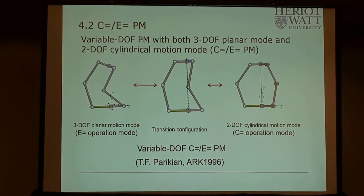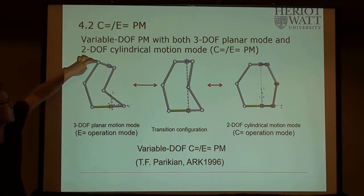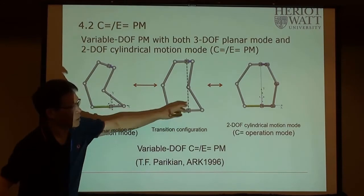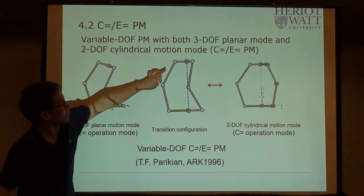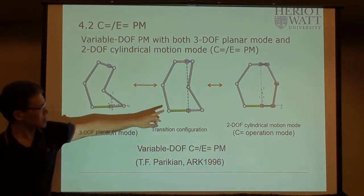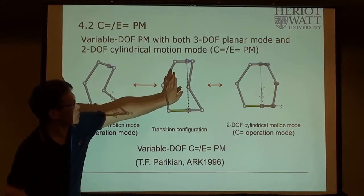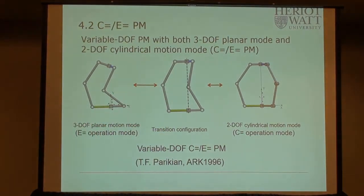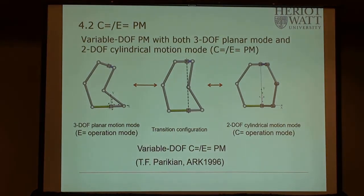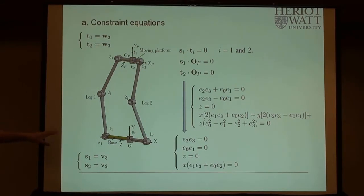Now let's consider another example. This mechanism was proposed in 1996 and is composed of eight joints—one through six, with joints seven and eight coaxial. This is the transition configuration. When these axes are not collinear, it produces planar motion. When you rotate the right half about the coaxial axis, it becomes a cylindrical motion—rotation and translation. So it has been known to have two modes. We need to use our approach to identify all the motion modes. We can solve the equations for this simple mechanism manually.